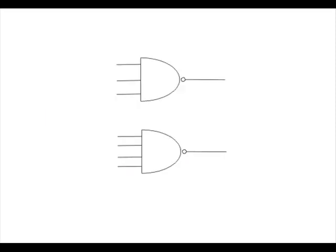Like the AND gate, a NAND gate can also have more than 2 inputs, such as 3 or 4 input NAND gates. A NAND gate is also referred to as a universal logic gate, as all binary operations can be realized using only NAND gates.